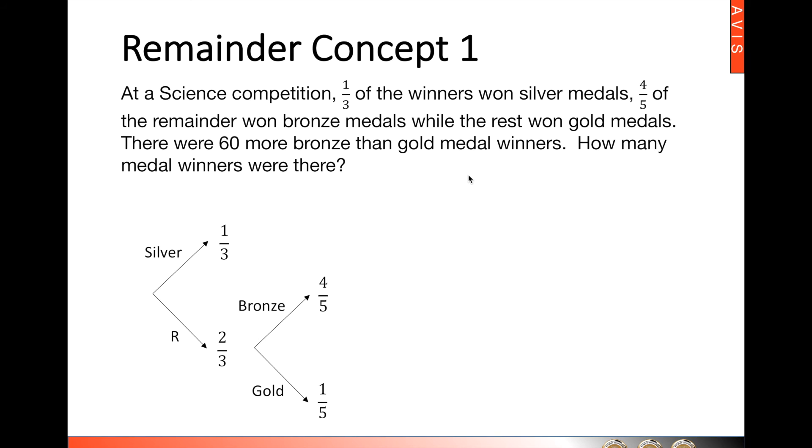Now we are also given an absolute number that the difference between bronze and gold medal winners is 60. Now to solve such a question we need to know the final fraction for bronze and gold medal winners. To do this we need to find the bronze medal winners where we will find four fifths of two thirds. Which of course means four fifths multiplied by two thirds and that will give you eight over fifteen of all the winners are bronze medal winners. So all together there are fifteen units of winners eight of which won the bronze medal.